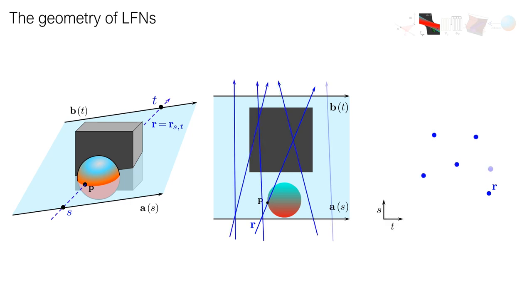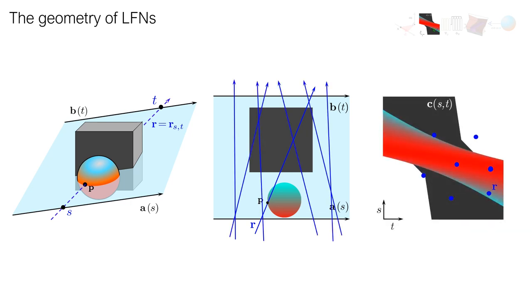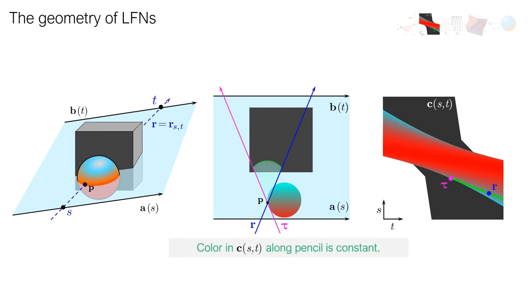If we plot in this coordinate system the colors seen by the rays, we get an epipolar plane image, which has many striking properties. The family of lines through a point P in the scene gives rise to a line in the epipolar image, and for Lambertian scenes, the color is constant along this line. Moreover, the depth of P corresponds to the slope of this epipolar line.